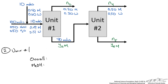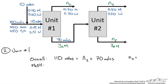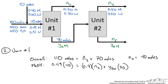Performing material balances around unit 1: an overall balance gives 110 moles in equals N2 plus 70, so N2 equals 40 moles. A methanol balance gives 0.49 times 110 equals 0.7 times 40 plus Y3M times 70, which we solve to find the mole fraction of methanol in the bottom stream is approximately 0.37.